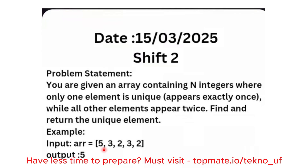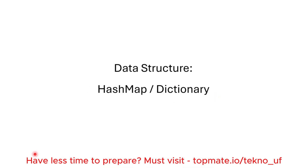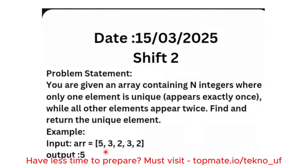So here we need to return five as output. I will give you 10 seconds to think about this problem statement so you can find the data structure suitable to solve it. The data structure that is suitable for solving this problem is a hash map or dictionary. We need to find that unique element — all elements have occurred twice, only one has occurred once — so we can use a hash map in any language.